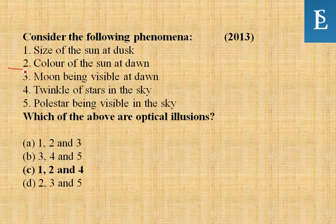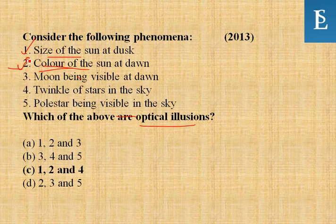Consider the following phenomena: size of the sun at dusk, color of the sun at dawn, moon being visible at dawn, twinkle of stars in the sky, and the polar star being visible in the sky. Which are optical illusions? Size of the sun at dusk — yes, optical illusion; color of the sun at dawn — yes; twinkle of stars — yes; polar star visible — no. So the answer is one, two, and four.